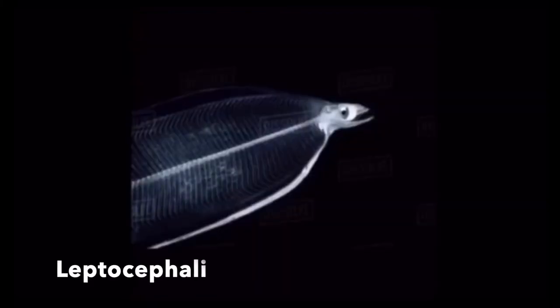Ships, planes, and people disappear in the Bermuda Triangle. But did you know eels also spawn here too?